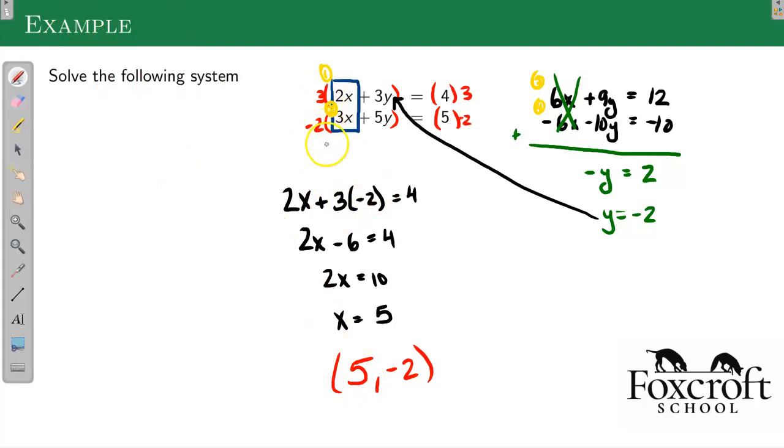This is the full elimination method. Making sure you manipulate the equations so that something cancels out when you add them. It could be x or y here. You could multiply the top equation by 5, the bottom equation by negative 3, and the y's would cancel out. It doesn't matter which one. But like I said, I just choose the smaller numbers.